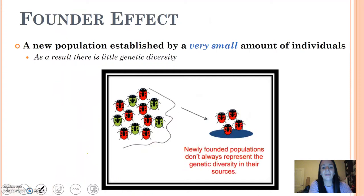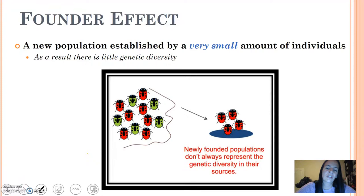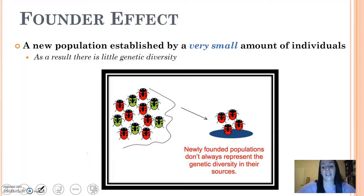In terms of shaping evolutionary theory, there are some different effects and relationships that drive evolution. The founder effect is when a population is established by a very small number of individuals. For example, these ladybugs want to move to a new forest. They don't really represent all members of the species because they only have the diversity they brought with them, and then they're going to interbreed and produce offspring with their genes.